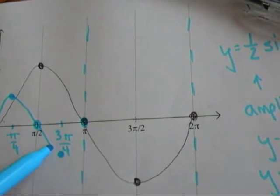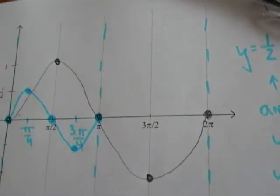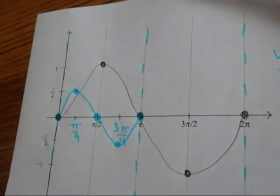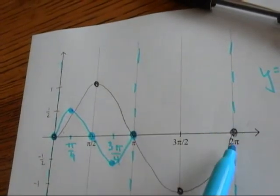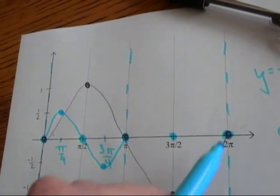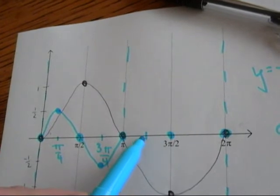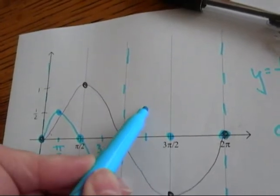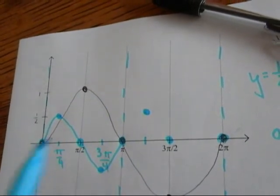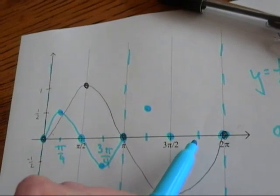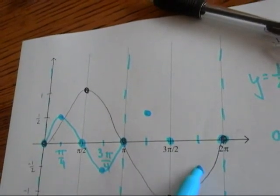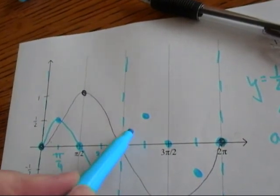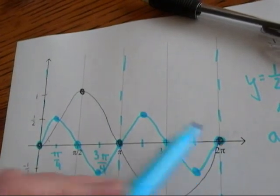So here's one of my two waves. I'm going to repeat this pattern in the second section from here to here. So first, third, and fifth are zeros. Right in the middle for the second point is my maximum at one half. Right in the middle is my fourth point for my minimum at negative one half.